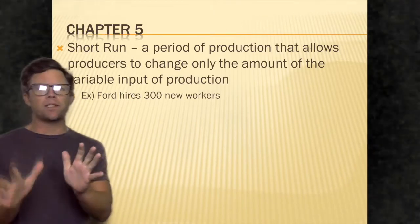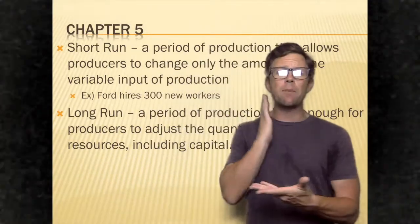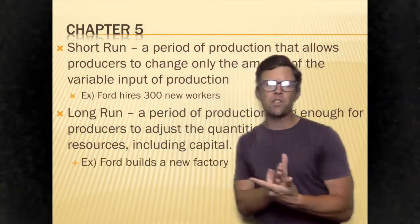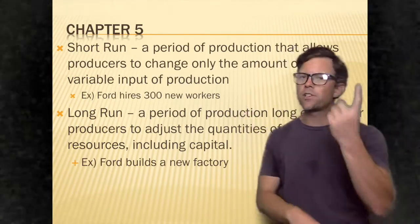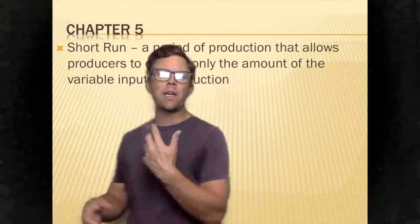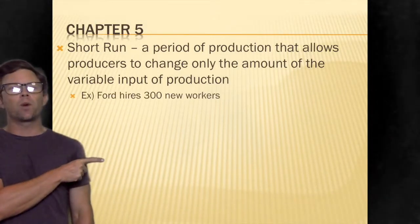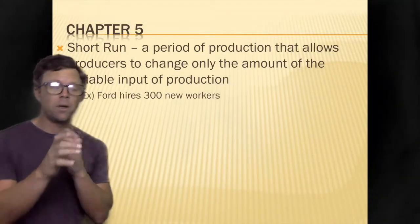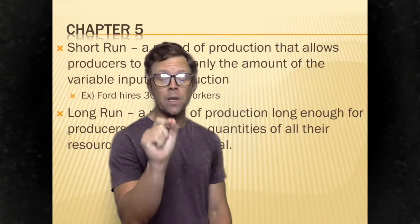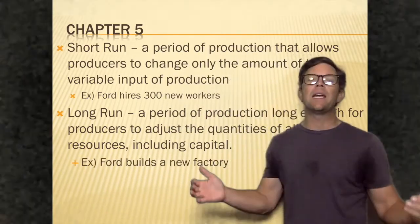Let's start off with some quick vocab — these are very important concepts that I'll refer to as the vocab term moving forward. In economics, we have very strict timelines and very strict variables. There is something in economics known as the short run. The short run is any period of production that allows producers to change only the amount of the variable input. One key thing: the short term is anything less than two years.